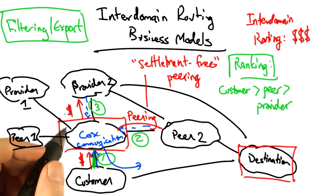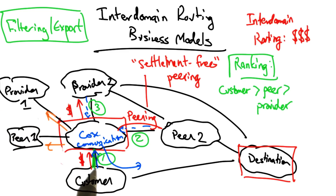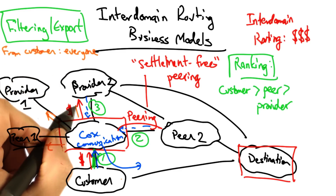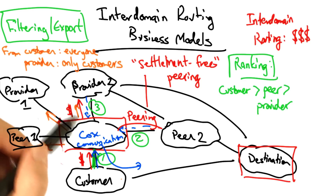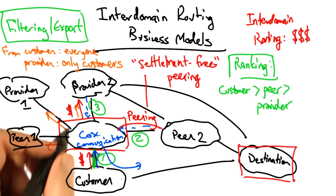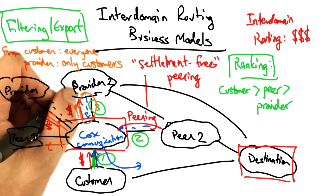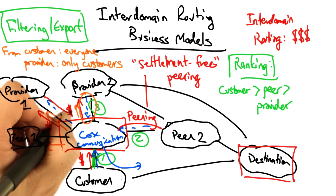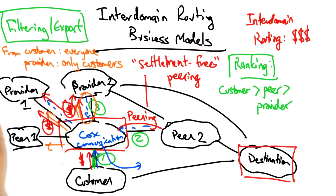What about filtering decisions? Routes learned from a customer, Cox would want to re-advertise to everyone else, because the more people use that route, the more money Cox makes. Therefore, a route learned from a customer gets advertised to everybody else. On the other hand, a route learned from a provider would only be advertised to customers. It wouldn't make any sense to advertise it to another provider, because money is flowing in the direction of the providers. Doing so would result in Cox essentially becoming a transit provider between two of its own providers and paying them both for the privilege of carrying that traffic. So routes learned from a provider would only ever be advertised to other customers.